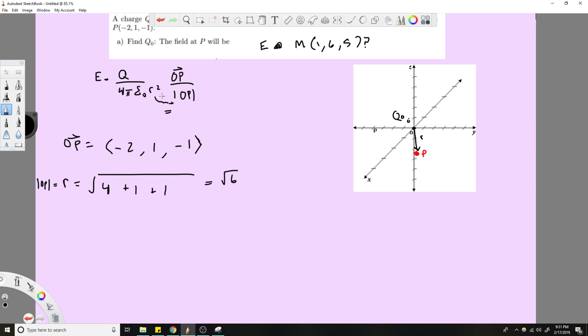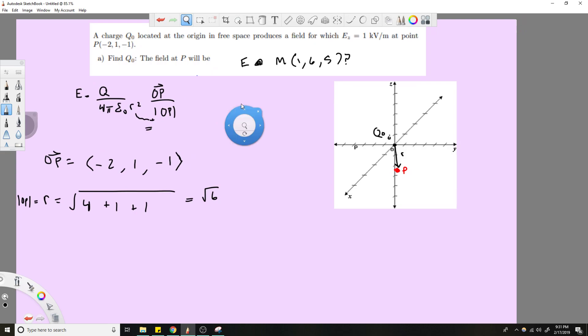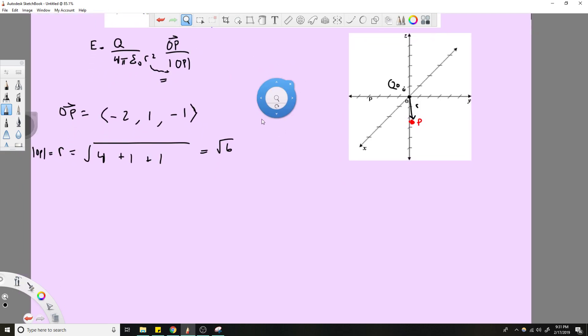So then, so now we know the radius. We know the vector OP. We know this Q from the Q0. Q0 was given, or no, we're looking for Q, sorry, we're looking for Q0. And we know, we don't know this E, but we know the EZ. So let's write out what we know.